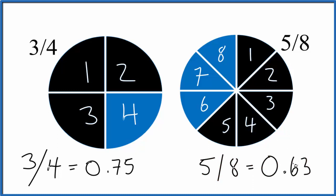So if you look at these two numbers here, 3 fourths, that's larger than 5 eighths. 0.75, that's bigger than 0.63.